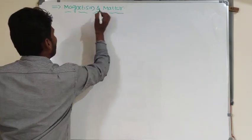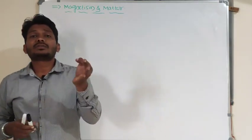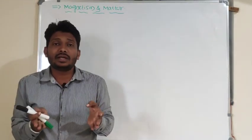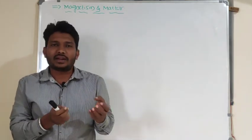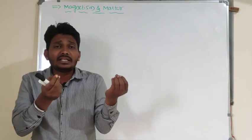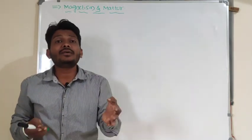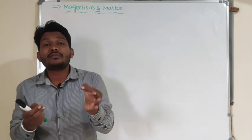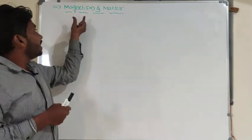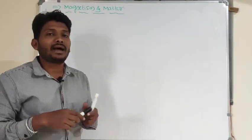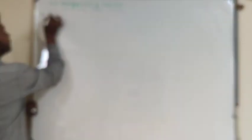Let's talk about magnetism first. What does magnetism mean? Magnetism is the phenomenon of attraction of a piece of iron — for example, iron getting attracted by certain substances. The phenomenon of attraction of a piece of iron, cobalt, or nickel by some substances is called magnetism.